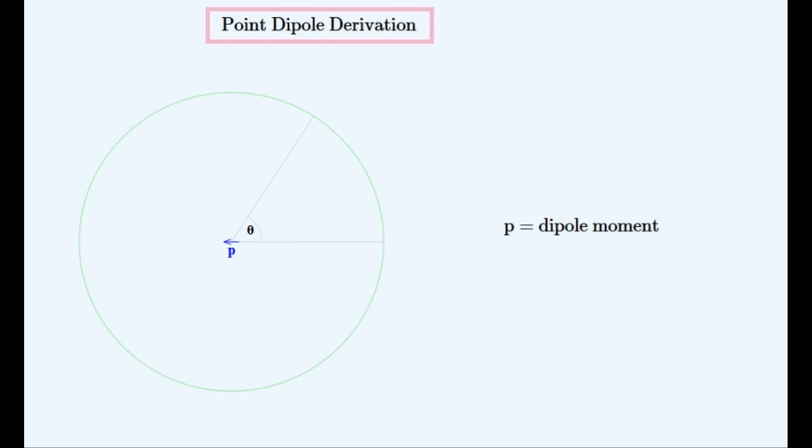This is how a point dipole would be represented, as a tiny arrow in the middle of a large circle, representing its direction. The angle with respect to it would be defined as so, always being zero behind the arrow, and going anticlockwise around the circle.